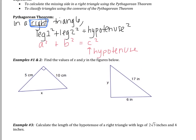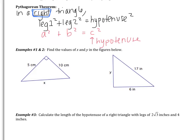Let's look at the examples. Examples 1 and 2 say: find the values of x and y in the figures below. I'm going to do example 1 with you, then you'll do example 2. We know the Pythagorean Theorem is only for right triangles, and I have a right triangle, so I'll use it: a squared plus b squared equals c squared. C is the hypotenuse, across from the right angle — in our case, c is x. A and b are the two legs: 5 and 10. So I have 5 squared plus 10 squared equals x squared.